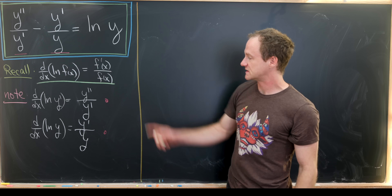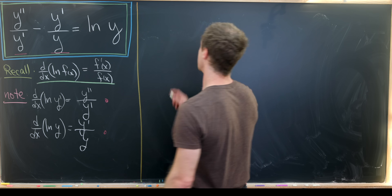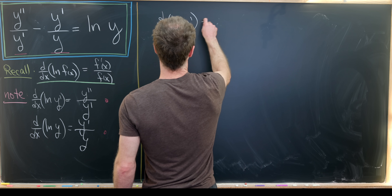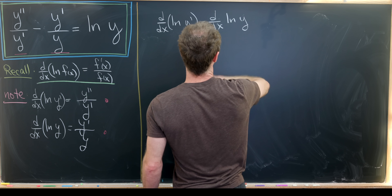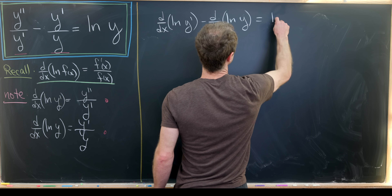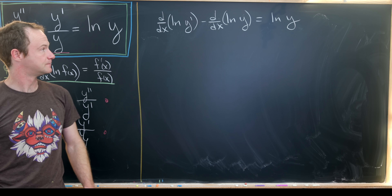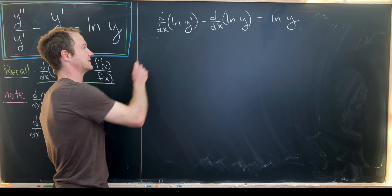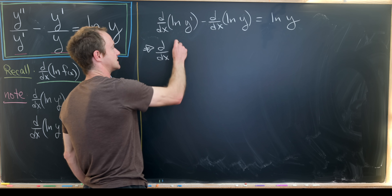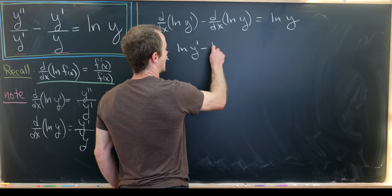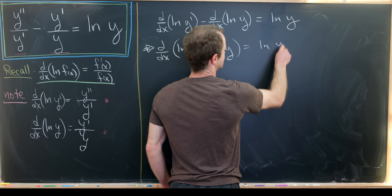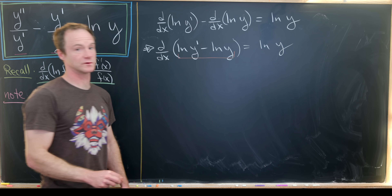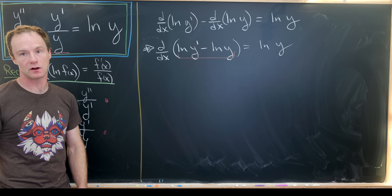Let's rewrite the differential equation using this observation. The first term is d/dx of ln(y'), and the second term is d/dx of ln(y), and on the right-hand side we still have ln(y). Now we'll use the fact that the derivative is a linear function to factor it out, giving us d/dx [ln(y') - ln(y)] = ln(y). This motivates us to use a logarithm rule to turn that difference into a single logarithm with a quotient.